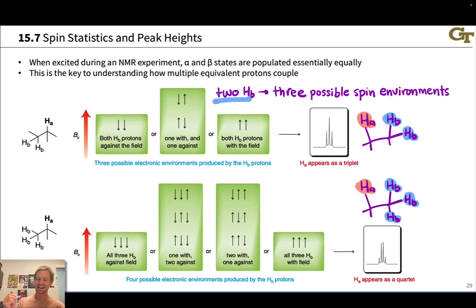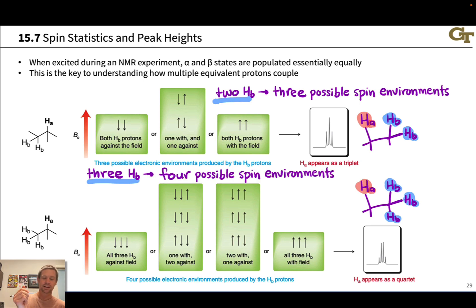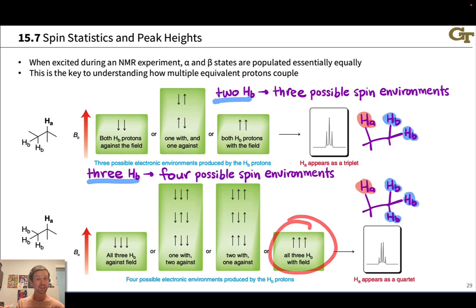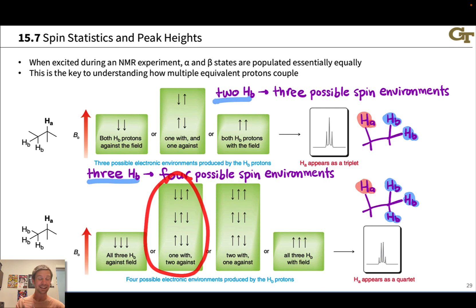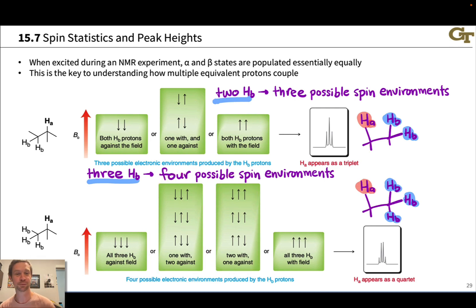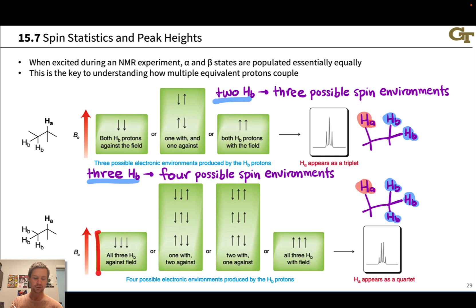When there are three neighboring protons, we get a quartet because the three neighboring Hb's give rise to four possible spin environments: all three against the field; two against and one with; one against and two with; and all three with the field. The two middle environments are three times as likely as the two on the outside, which is why we see the 1:3:3:1 pattern in a quartet.